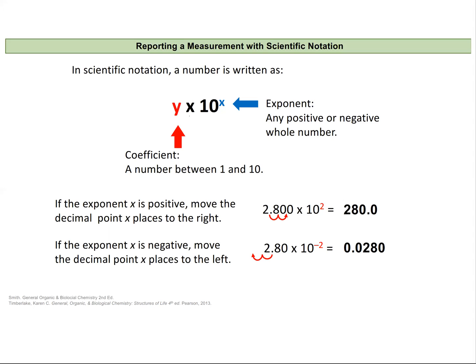It'll be composed of a coefficient or a number that's usually between 1 and 10, something that has a decimal place followed by other digits. Then it's multiplied by 10 to an exponent, and this exponent will be a whole number and will be either positive or negative.